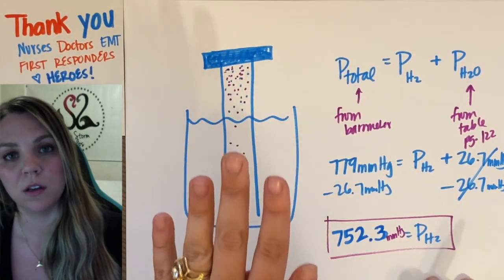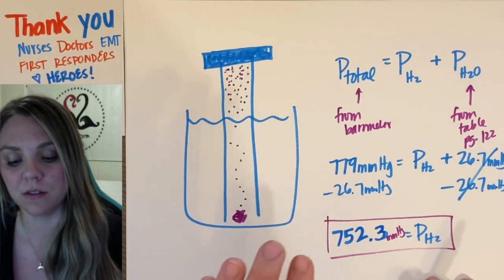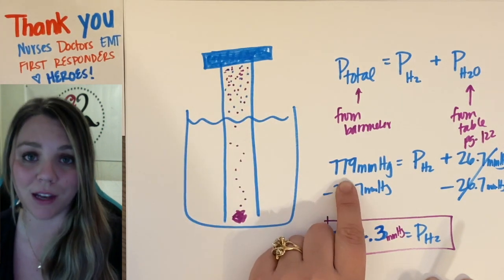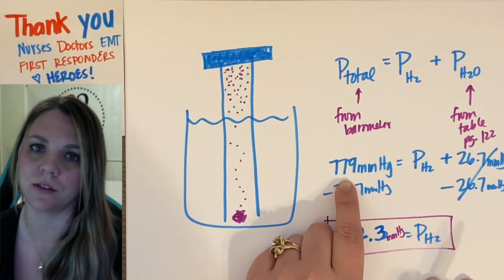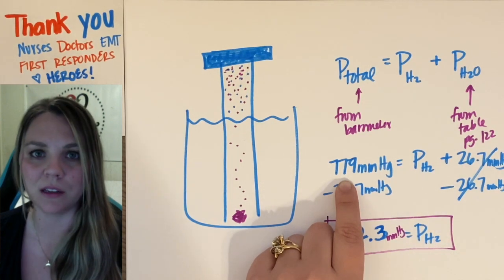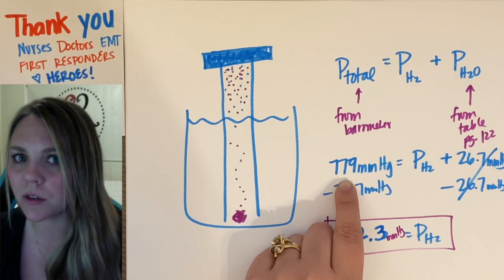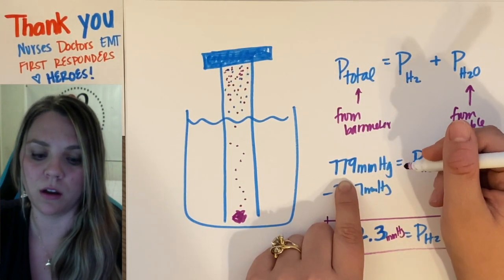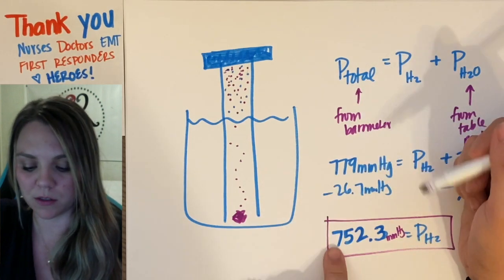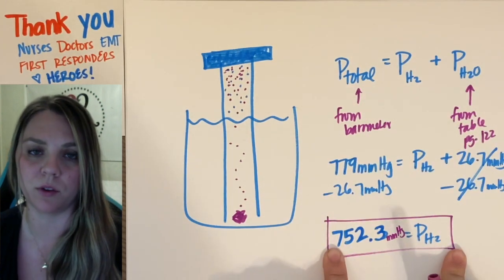So if you were doing your calculations, and you were using 779 as your pressure for hydrogen, you're going to get some really weird answers for your percent yield, for how much product you should have made. Because you're using the wrong value of your pressure. So make sure you're using the correct value for your pressure.